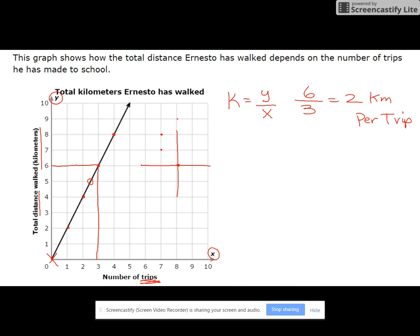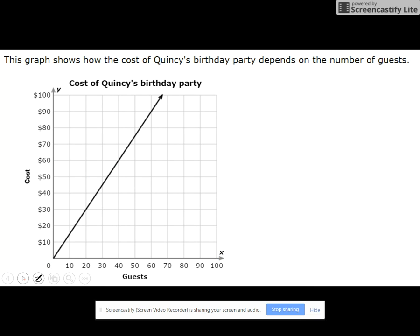Remember, you can also write that as two kilometers over one trip. Let's try another one. On this one, we've got the cost of somebody's birthday party, and it shows the number of guests and the cost.